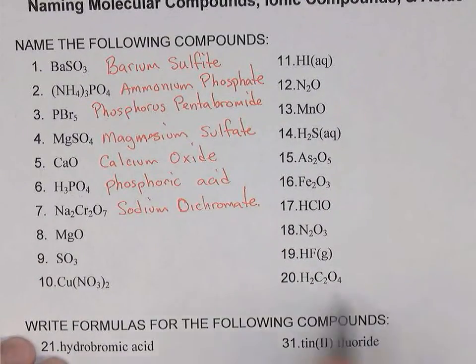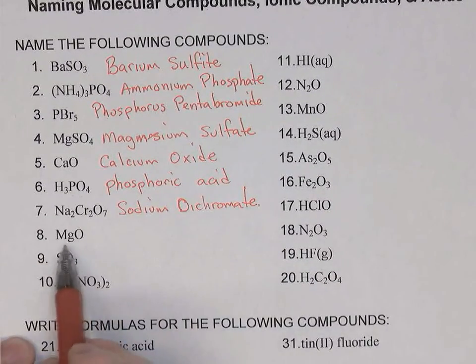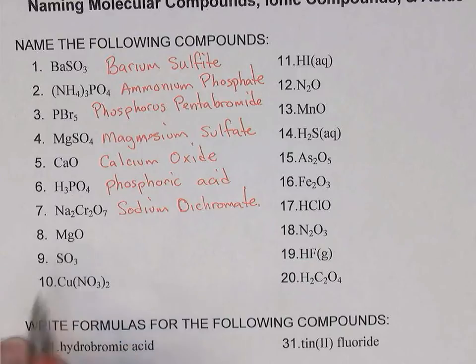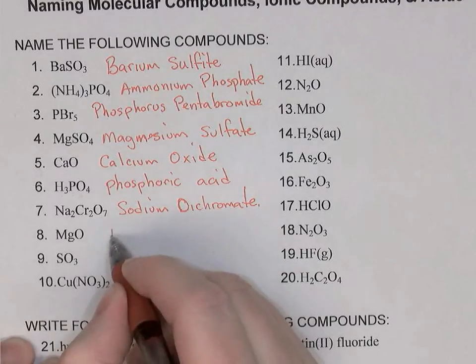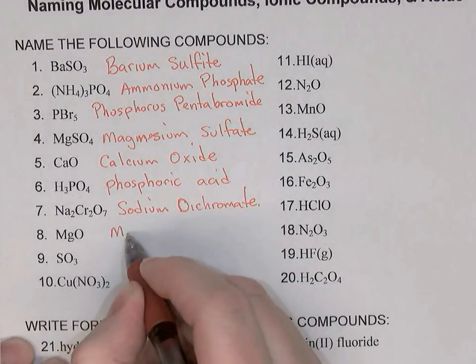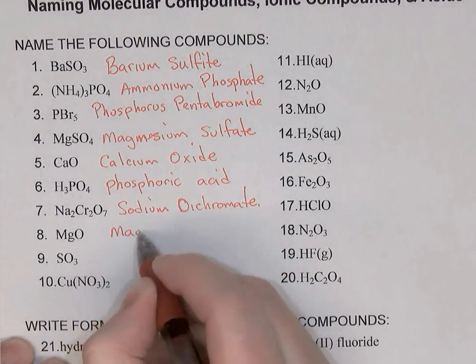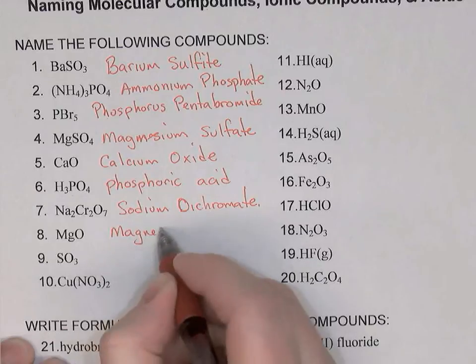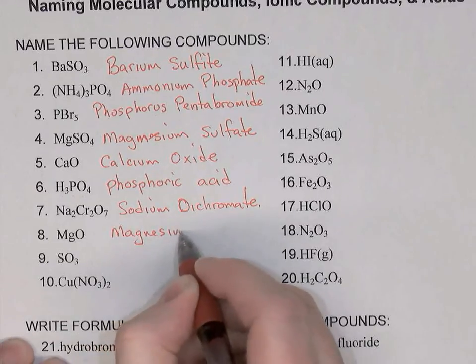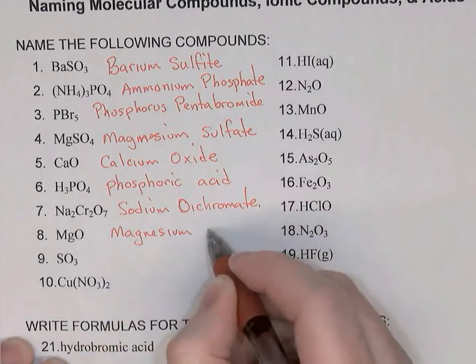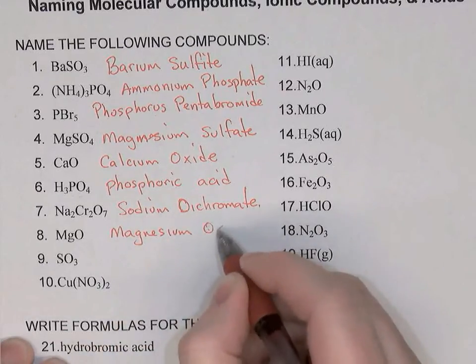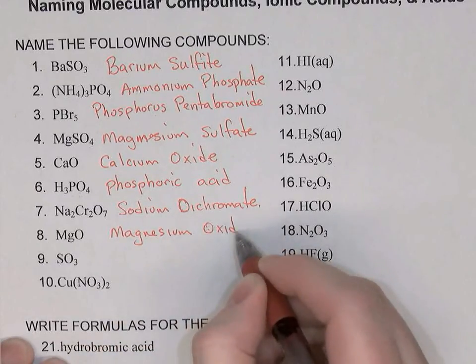Number 8: again an ionic compound because it starts with a metal. Name the cation — magnesium — and then the anion: oxide.